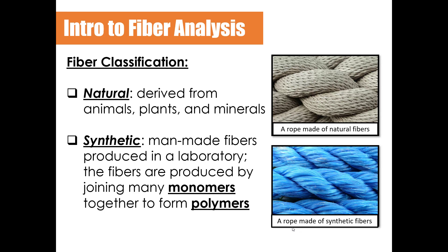Fibers can be classified in two ways: natural fibers and synthetic fibers, and you need to know the difference between the two. Natural fibers are derived from animals, plants, and minerals — things like wool, cotton, angora, or silk. Synthetic fibers are man-made fibers made in a laboratory by taking monomers and joining them together in a chemical process to form polymers. Synthetic fibers include things like rayon, polyester, nylon, and acetate.